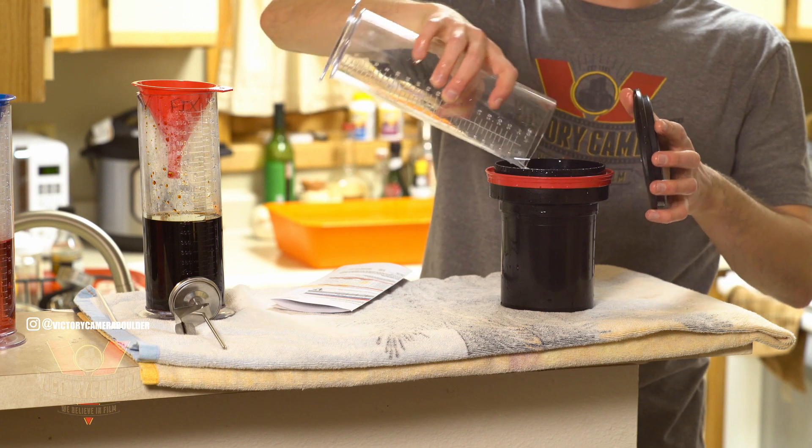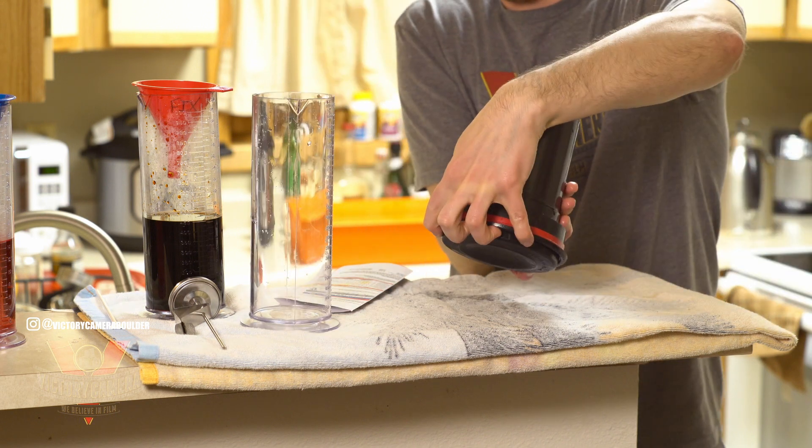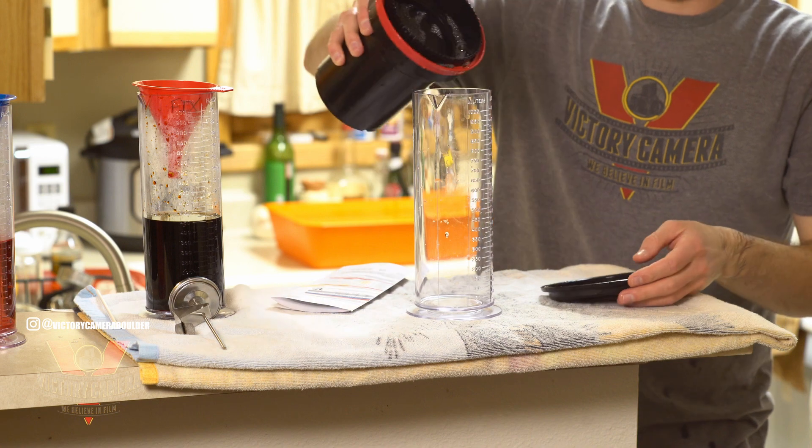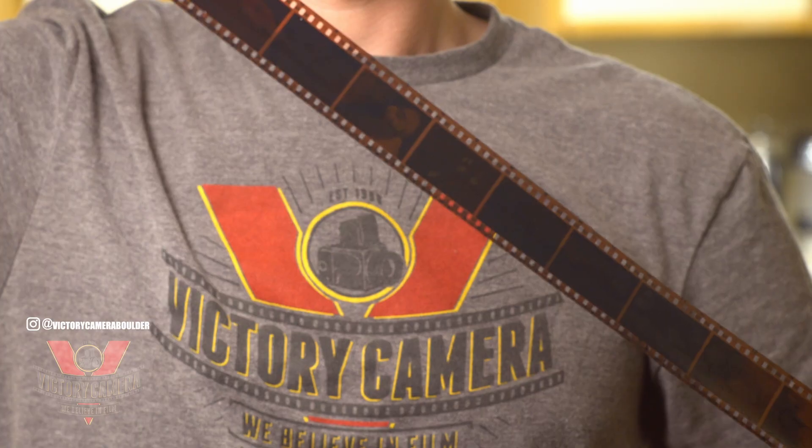Finally pour in the stabilizer, agitate the first 15 seconds, then let it set for 30 seconds to a minute total. And that's it. Pop the top and pull your film out to dry.